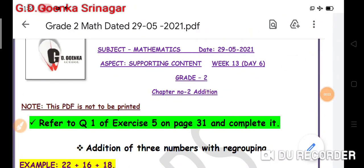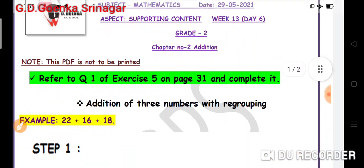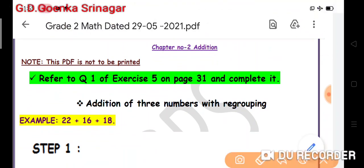Greetings of today, my dear little Goinkins. Welcome to your mathematics class where we are doing our chapter number two: addition. Refer to your mathematics book on page number 31, exercise number 5, where we will learn how to add three two-digit numbers with regrouping.